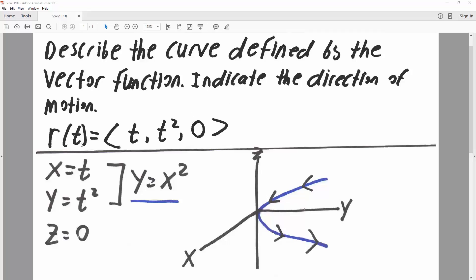So, since r(t) is equal to the vector <t, t squared, 0>, we know that x is equal to t, y is equal to t squared, and z is equal to 0.